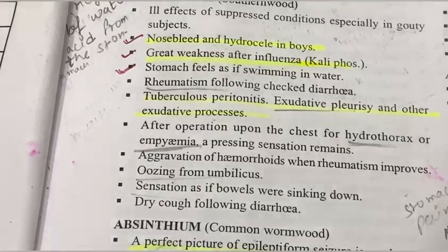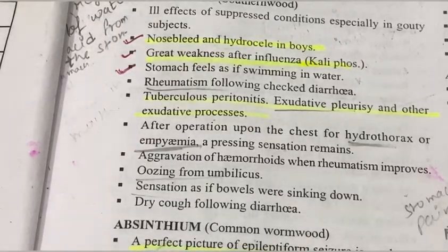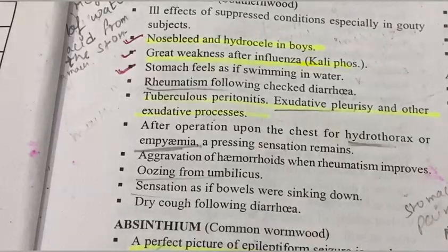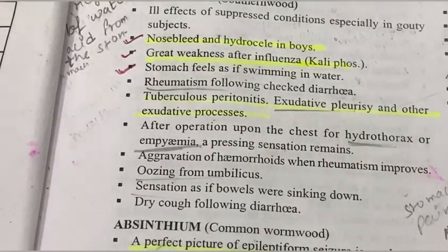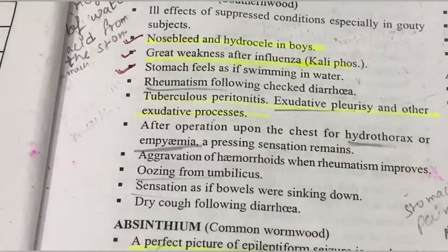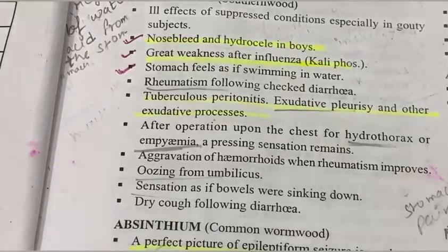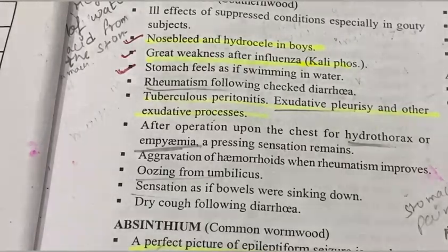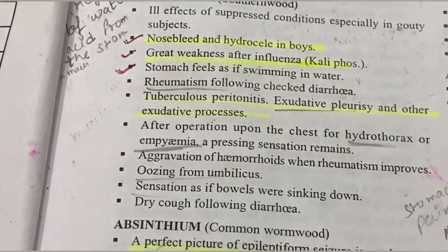The third symptom is great weakness after influenza, cough, or any type of viral infection. If a patient has been experiencing long-term weakness due to such infections, Abrotanum plays a very effective role in breaking that condition and reducing that weakness.